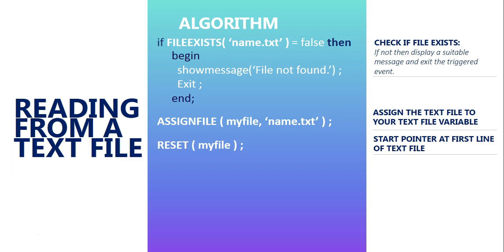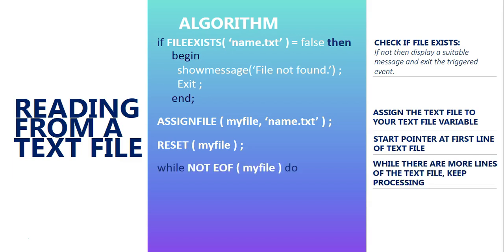Most of the time you will not know how many lines are in a text file. If you do know — say there are always ten lines — you could use a for loop. But the majority of the time you won't know, so we need to work through each line bit by bit until we reach the end of the text file. That's where we have our while loop — while we are not at the end of the text file, keep processing. When we get to the end, then we stop.